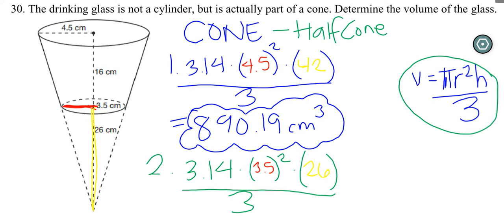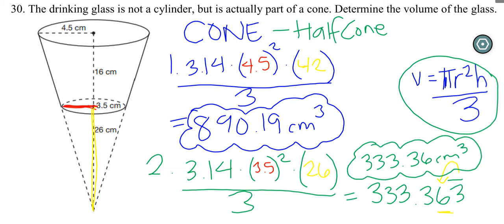So we do 3.14 times 3.5 squared times 26, and then divide the whole thing by 3. And we get 333.363 repeated. Now we need to round this to the hundredths place. So then our final answer would be 333.36 cubic centimeters. And that isn't our final answer either, that's just part of it.